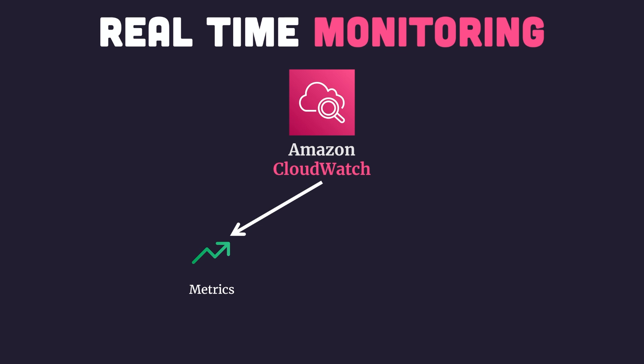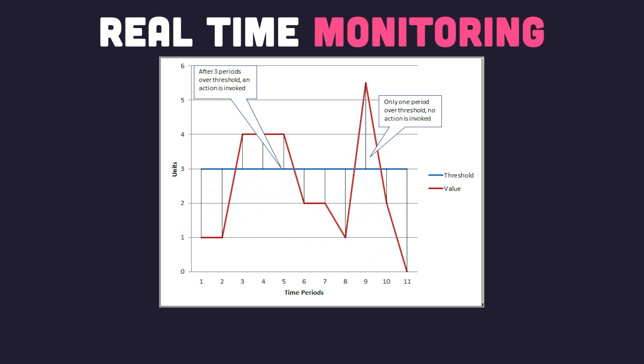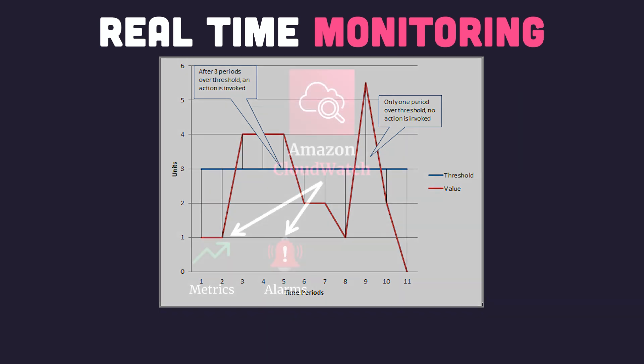Using metrics helps you understand your application, but simply having access to a metric on a dashboard is useless unless a person or system is constantly monitoring it. This is where CloudWatch alarms come into the picture. CloudWatch alarms help you get notified when specific metrics rise above or below a certain threshold. For example, you can create an alarm that fires when the latency of your application rises beyond 5 seconds. You can customize the metric, the time period, and actions you take when the alarm fires.